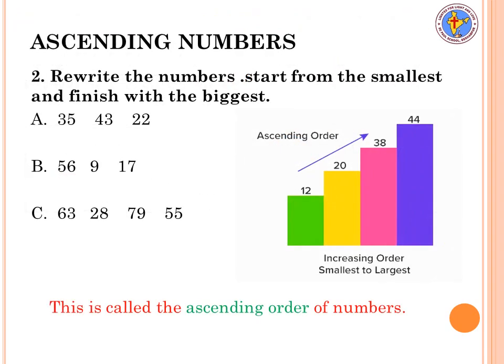Next, we write numbers in ascending order. Ascending order means starting from the smallest number and finishing with the biggest number — smaller to bigger. For example, with the numbers 35, 43, and 22, you first write the smallest, then the next, then the biggest: the answer is 22, 35, 43. For the next set — 56, 9, and 17 — the smallest is 9, then 17, then 56: answer is 9, 17, 56.